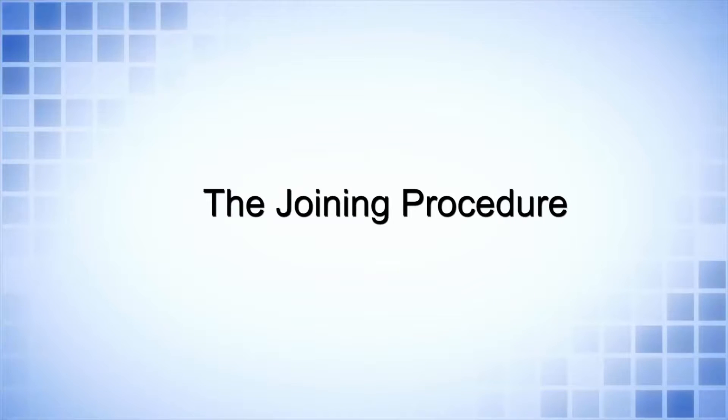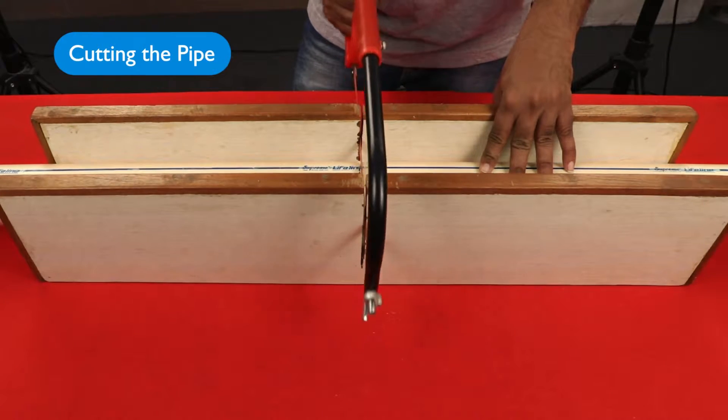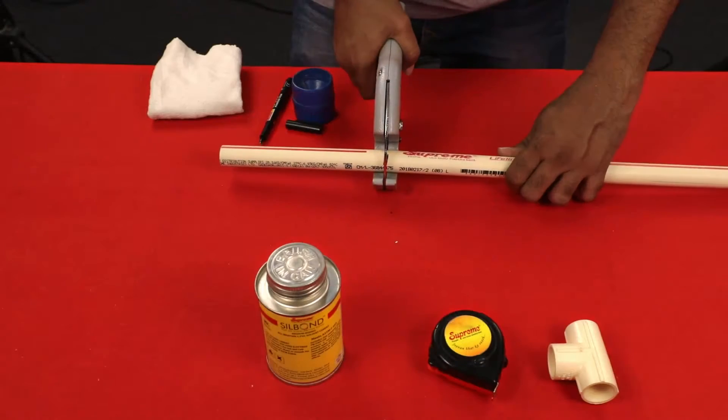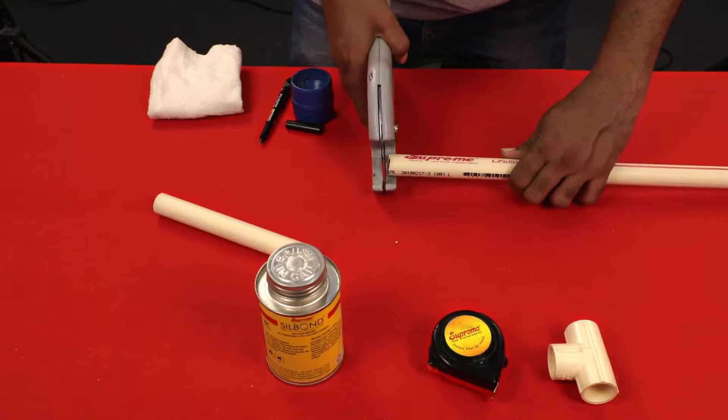The Joining Procedure. Cutting the Pipe: Cut the pipe square with handsaw using suitable guide or by pipe cutter.